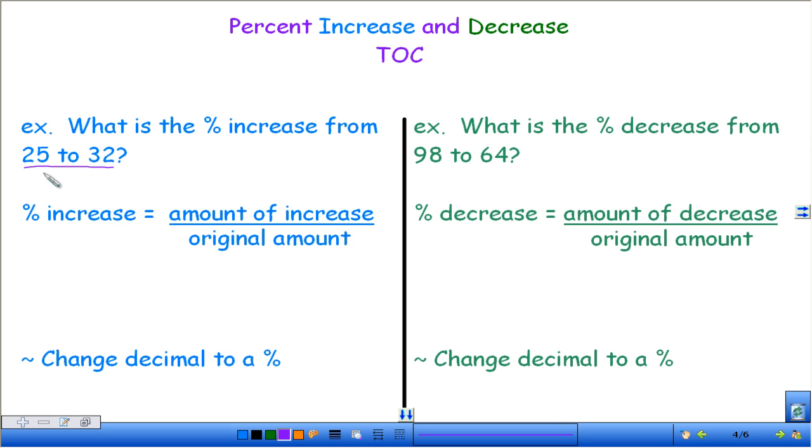So first example, if you go from the number 25 to the number 32, I want to know what percent increase is that. So we're going to follow this formula down here. We need to know the amount of increase, so how much did it go up, over the original amount. So we're starting at 25, so that's our original amount. And then our amount of increase, well you can easily see this one, but when the numbers get a little bit bigger, all you do is subtract. So we need to take 32 minus 25, and we get 7. So our amount of increase is 7, it went up by 7 numbers.